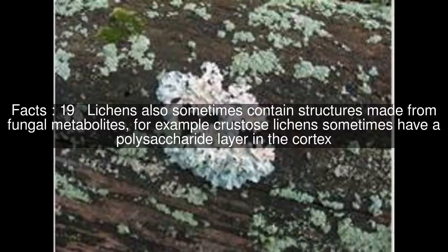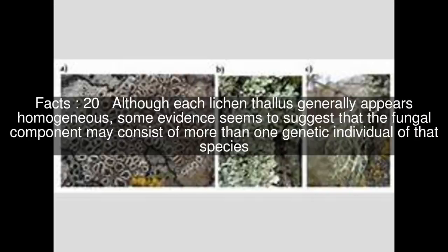Lichens also sometimes contain structures made from fungal metabolites. For example, crustose lichens sometimes have a polysaccharide layer in the cortex. Although each lichen thallus generally appears homogeneous, some evidence seems to suggest that the fungal component may consist of more than one genetic individual of that species.